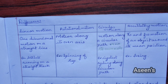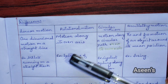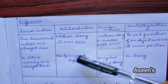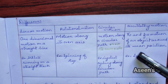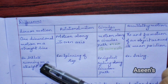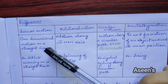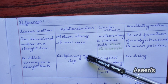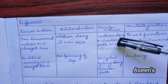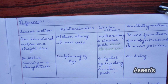Since we have already stated the types of motion, it is time to mention their differences. We have stated 4 types of motion, and I have mentioned the differences between all 4. For linear motion, it is a 1-dimensional motion with its example. Then rotational motion with its example, circular motion with its definition and example, and finally oscillatory motion with its example.